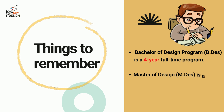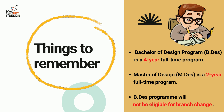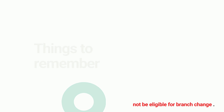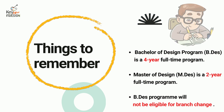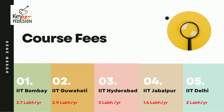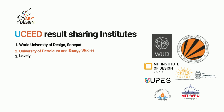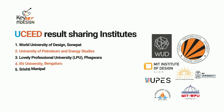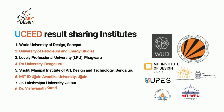The Bachelor of Design program is a four-year full-time program, and the Master of Design program is a two-year full-time program. In the B.Design program, you will not be able to change to any other branch in between. The course fee details for these five colleges are as follows. You can directly take admission in these specific 15 colleges with the UCEED result.